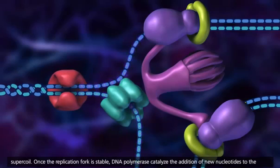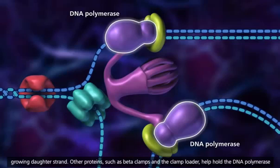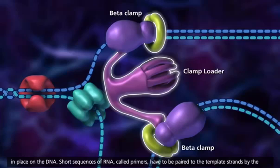Once the replication fork is stable, DNA polymerase catalyzes the addition of new nucleotides to the growing daughter strand. Other proteins, such as beta-clamps and the clamp loader, help hold the DNA polymerase in place on the DNA.